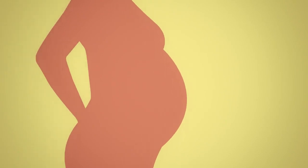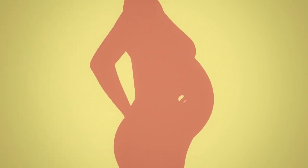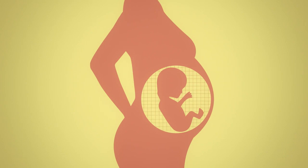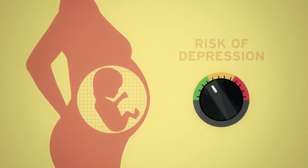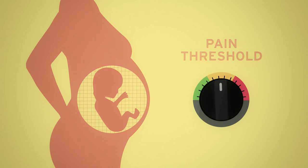Imagine you're soon to be a parent. Your doctor informs you that if you wanted, you could choose certain features of your child's biology. You could choose how genetically prone to depression they will be, their levels of anxiety, jealousy, anger and even their pain threshold.